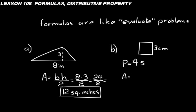Since all 4 sides are the same, the perimeter is just 4 times the length of one side. We could add 3 plus 3 plus 3 plus 3, but it's the same thing as saying 4 times S. So we just say 4 times 3 equals 12 centimeters.